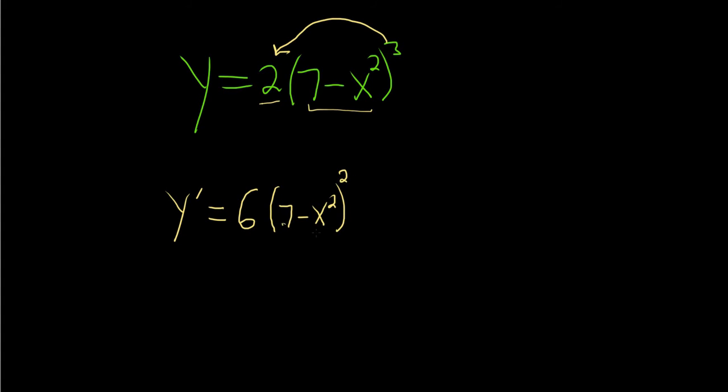So this is the derivative of the outside, and we've left the inside untouched. Now we're going to multiply by the derivative of the inside. So times, and that'll just be negative 2x, because the derivative of 7 is 0, and the derivative of x squared is 2x.